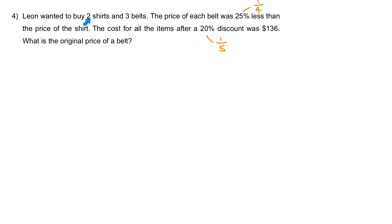Leon wanted to buy 2 shirts and 3 belts. The price of each belt was a quarter less than the price of the shirt. The belt is 1 unit lesser than the shirt. The price of each belt was 1 unit lesser. The denominator always belongs to the item after the fraction. So the shirt is 4 units. For 1 shirt, it is actually 4 units.